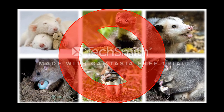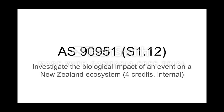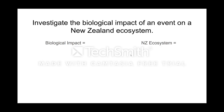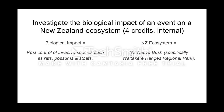That is our biological impact of an event — the biological impact of pest control. This image really clearly shows the damage a pest species can do to the New Zealand bush. The image on the left has been impacted by overgrazing and removal of bird species, compared to the one on the right in its natural, recovered state when you implement pest control and remove them from that environment. Pest control can have a significant impact: by applying it, you reduce the impact of those pest species and provide a space for that ecosystem to recover. Our biological impact in this internal is the pest control of invasive species.